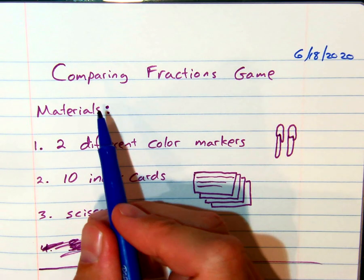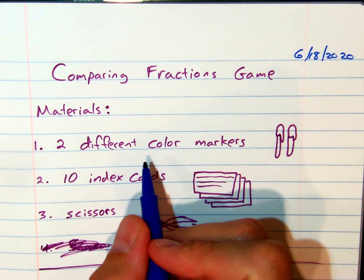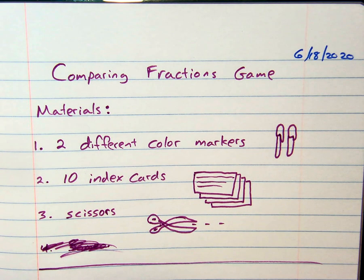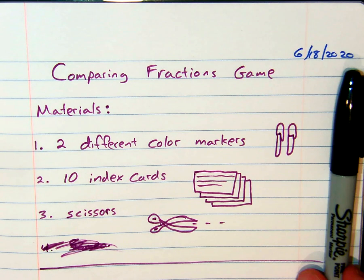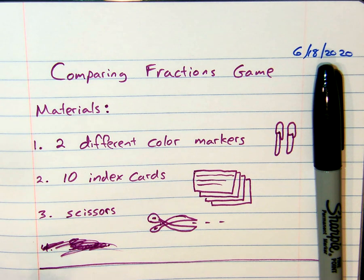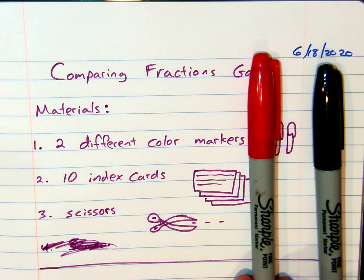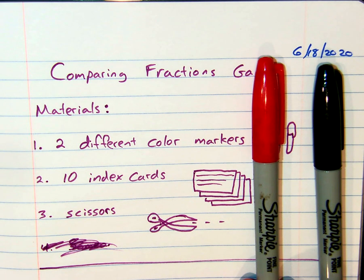The materials you need: you will need two different colored markers. For my markers, I'm using Sharpies, but you can go ahead and use any markers you have. If you don't have markers, you can use crayons or colored pencils. We just need to have two different colors.